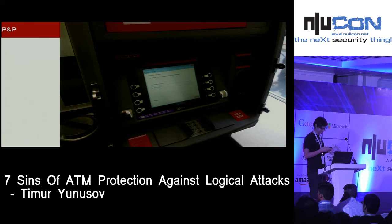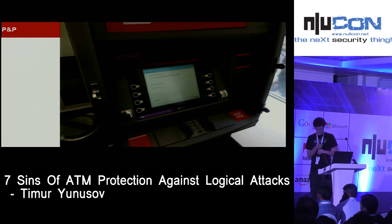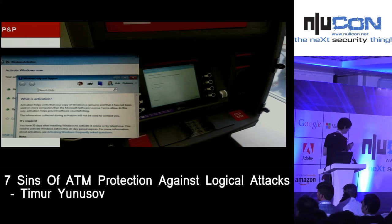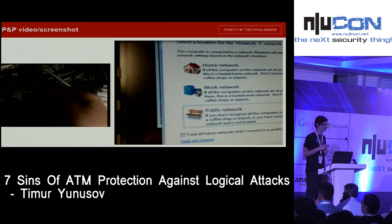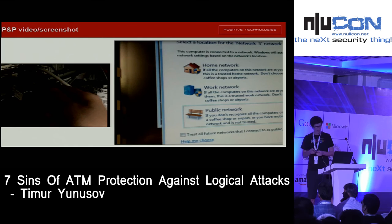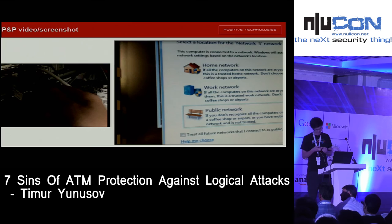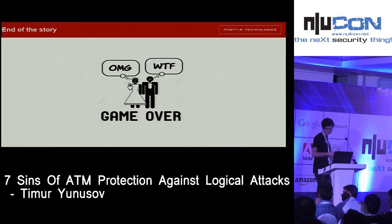A fun picture you sometimes see in ATMs is a Windows activation window — it's funny, but it also gives access to the help menu. If you don't want to wait for that window, you can use a plug-and-play device like a USB network card. In a default Windows 7 configuration, plugging in your own USB network card triggers a very useful window asking you to choose a network type, with a help link at the bottom — essentially helping the hacker bypass the kiosk and extract all money from the ATM.